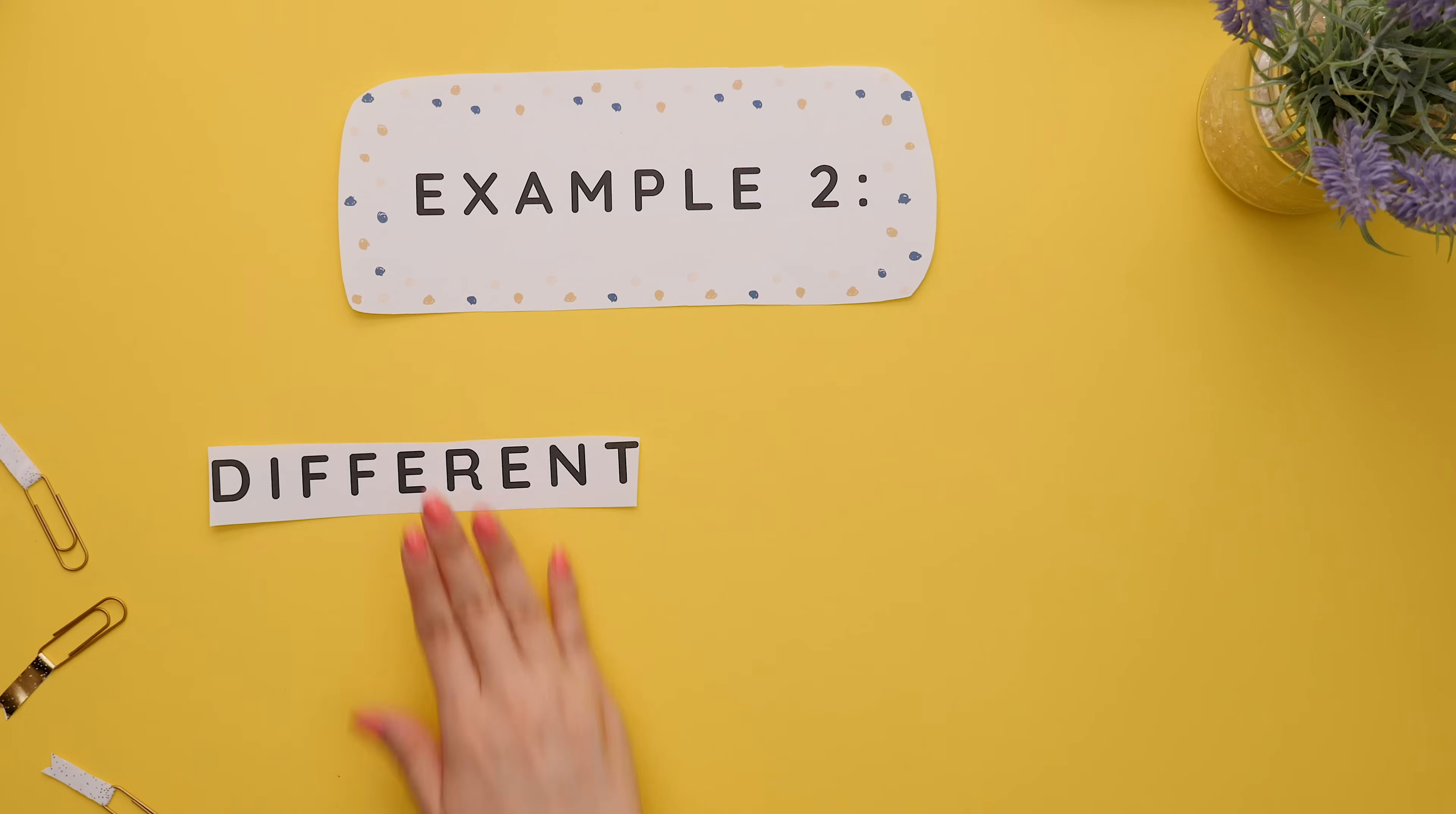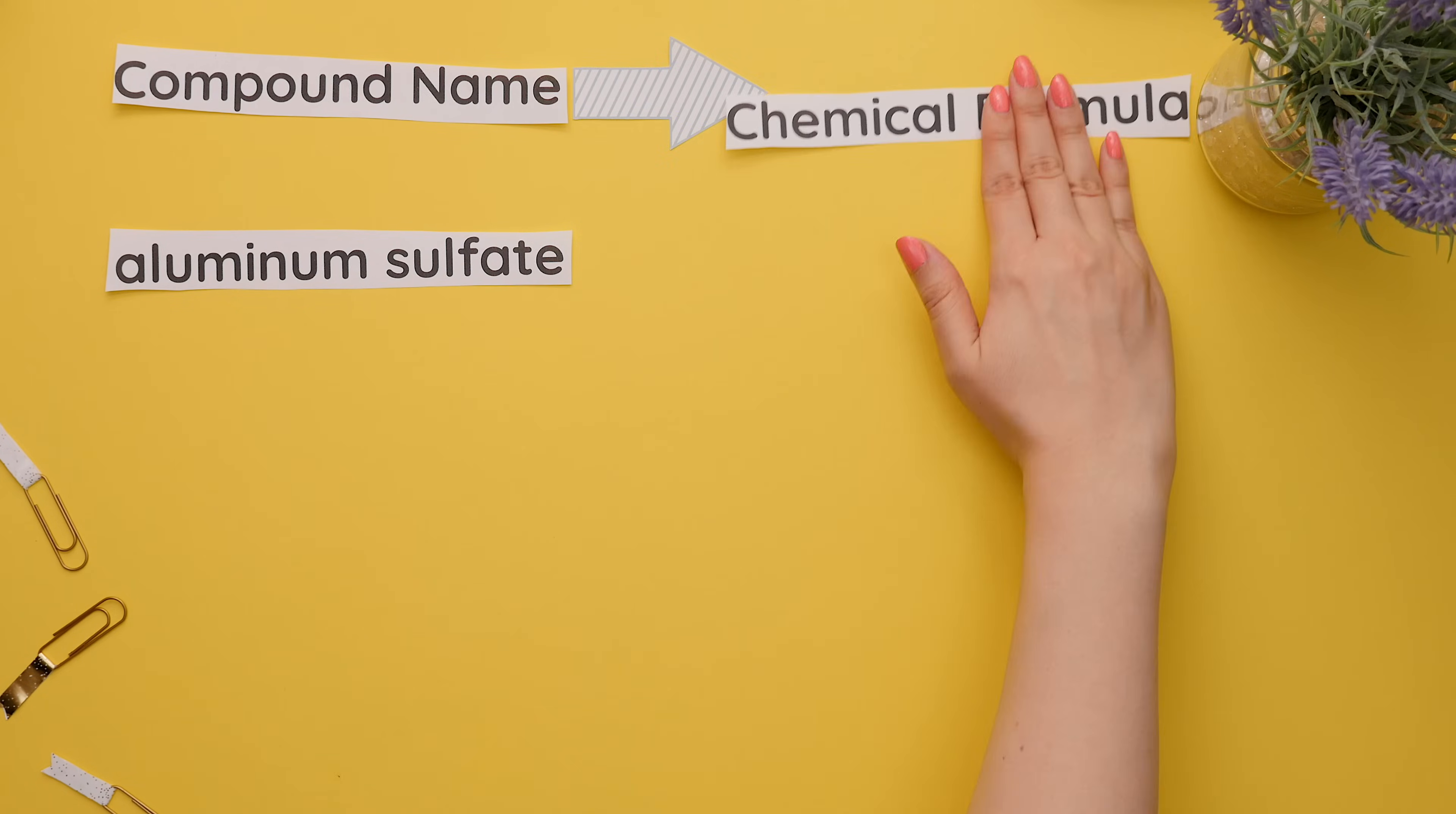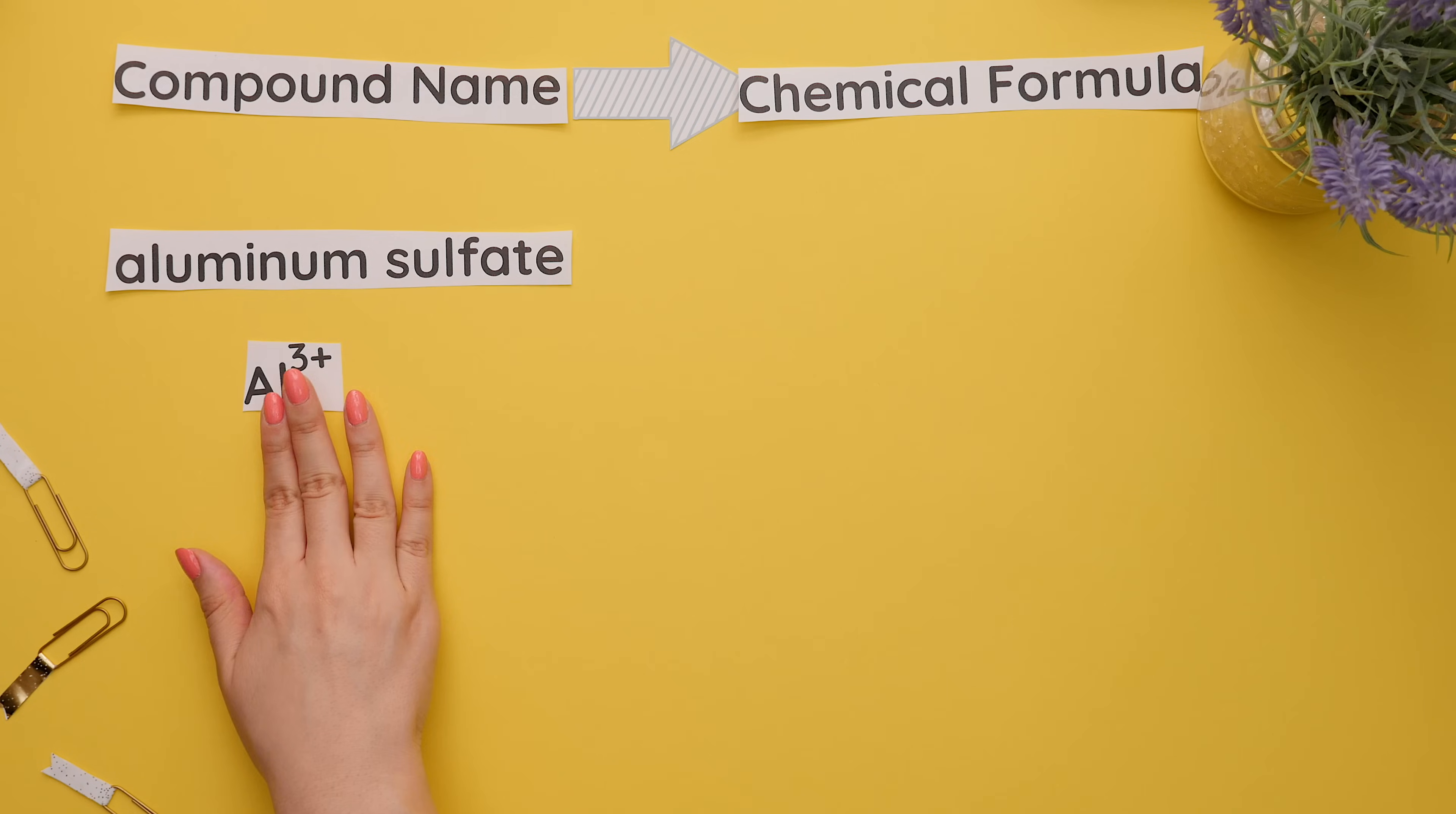Example two, different charges. Our given compound name is aluminum sulfate and we are finding the chemical formula, so identify the symbol and the charge of aluminum, which is Al with a 3 plus charge, and sulfate is SO4 with a 2 minus charge.